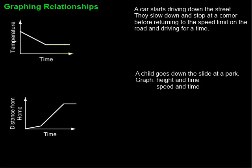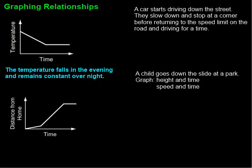Then something else happens — notice that the line flattens out. It's horizontal. The temperature is staying the same over a period of time. We don't necessarily need numerical values to look at these things in general — just whether it's going up, going down, or staying the same. A story that fits might be: the temperature falls in the evening and remains constant overnight.